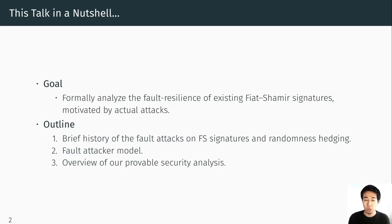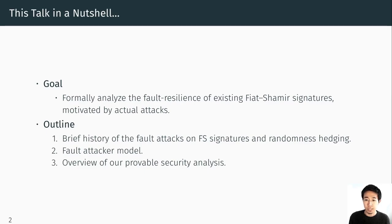As the title suggests, this work is basically about fault attacks against Fiat-Shamir type signatures. Especially, our goal in this work is to formally analyze the fault resilience of the existing Fiat-Shamir signature schemes using the provable security methodology. This work is motivated by existing concrete fault attacks against such signature schemes. In this talk I'll briefly cover the history of fault attacks, explain the randomness hedging countermeasure, present our formal fault attack model, and give an overview of our provable security analysis.